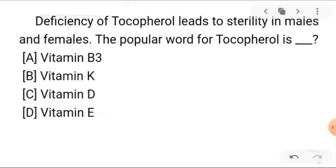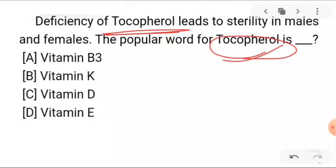Next: deficiency of tocopherol leads to sterility in males and females. You are asked what tocopherol is — if it is absent in any person, male or female, it causes sterility. A is vitamin A, B is vitamin B3, C is vitamin K, D is vitamin D, and the answer is vitamin E.